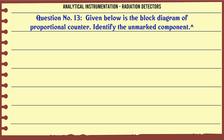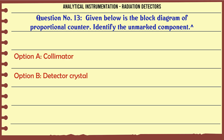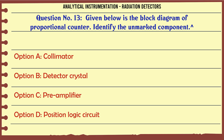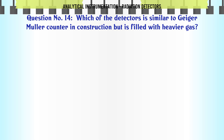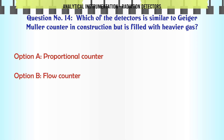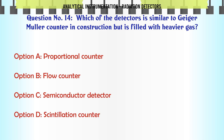Given below is the block diagram of a proportional counter. Identify the unmarked component. A. Collimator. B. Detector crystal. C. Preamplifier. D. Position logic circuit. The correct answer is Preamplifier.